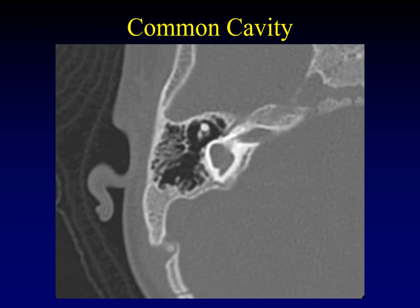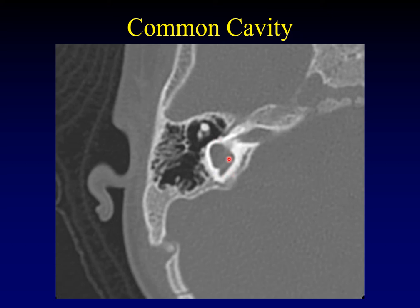Next is the common cavity deformity, where we see the initial form of the cochlea and vestibule as a single bag at the end of the internal auditory canal, with no differentiation of individual elements of the cochlea or vestibule — in fact, no way of differentiating them from each other. That's why we call it a common cavity. This is a severe form of dysplasia — just one big blob.